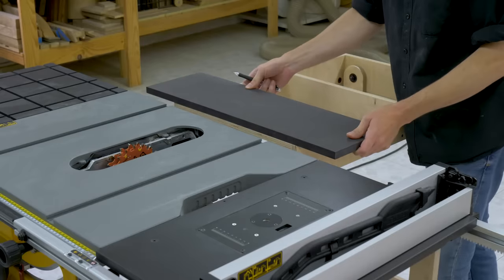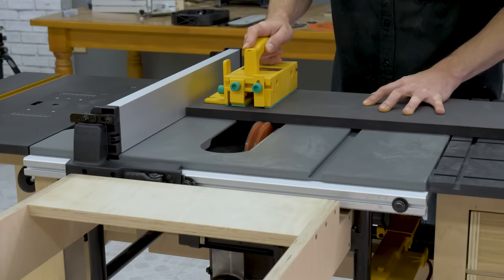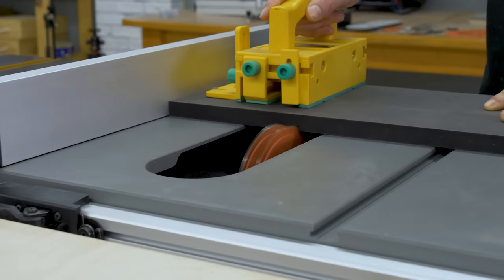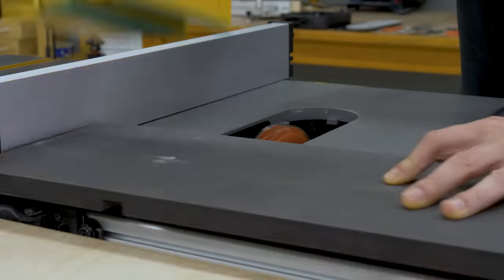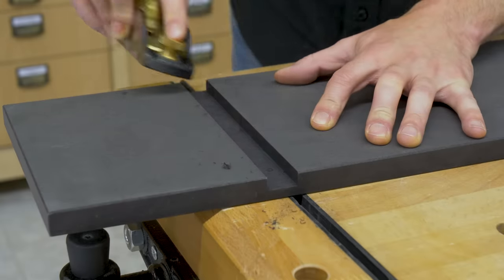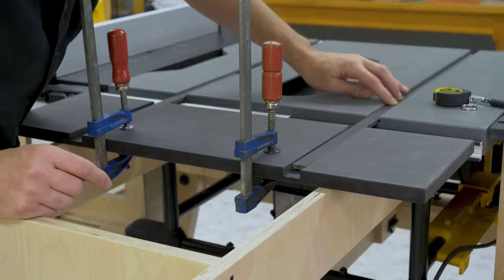Now I'm going to machine the table top. First I'll make two channels with a dado stack and two runs. These channels must be aligned with the table saw miter slots. I'm also going to bevel all the edges of the top and drill some holes in the plywood so that this part can be screwed from below.